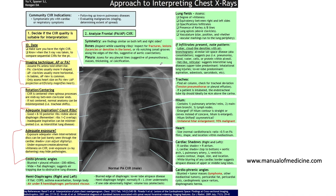Regarding pleural structures, assess for any pleural lines suggesting pneumothorax, masses, thickening, or calcification. In the lung fields, assess the degree of whiteness (opacification), equivalency between right and left sides, and the pattern of any infiltrates. Reticular infiltrates are straight and wispy, while nodular infiltrates are more rounded opacities. Look for curly A or B lines in the setting of fluid overload or heart failure, the lung apices above the clavicles, and the vasculature — noting size, position, and whether vascular markings run to the lung periphery.